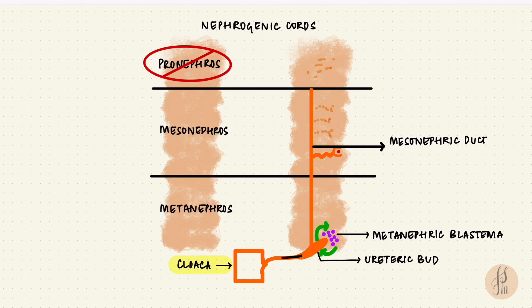So during fetal life, when the kidneys function, they form urine. That drains into the cloaca and then into the amniotic fluid. And that is how the kidneys develop.